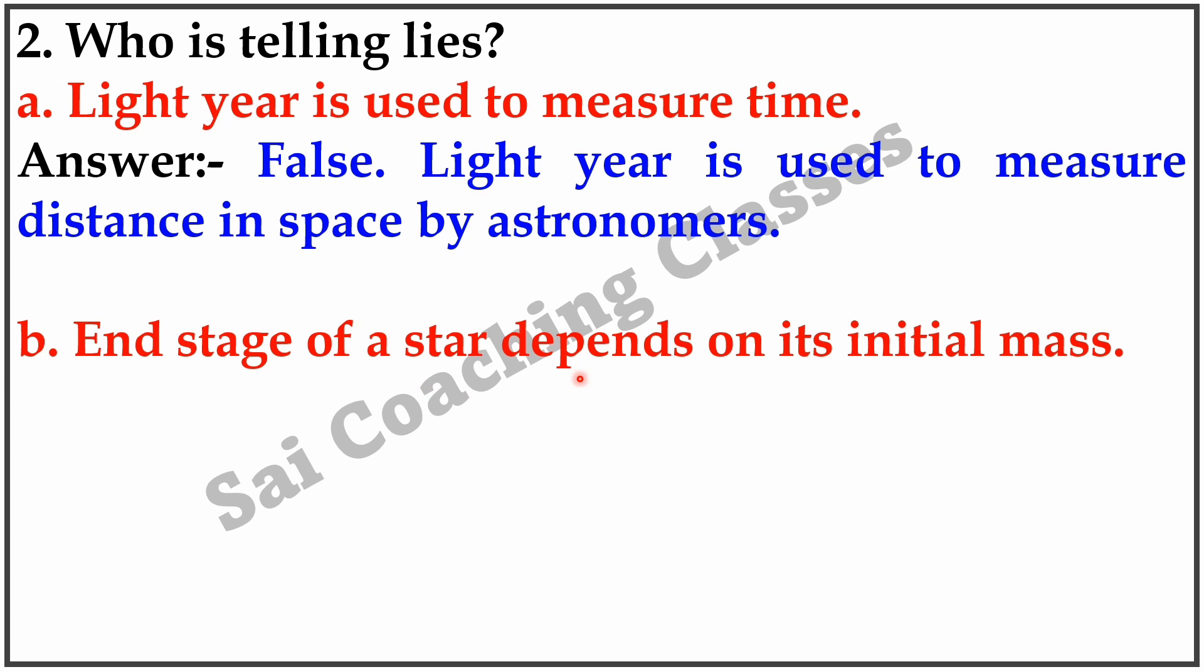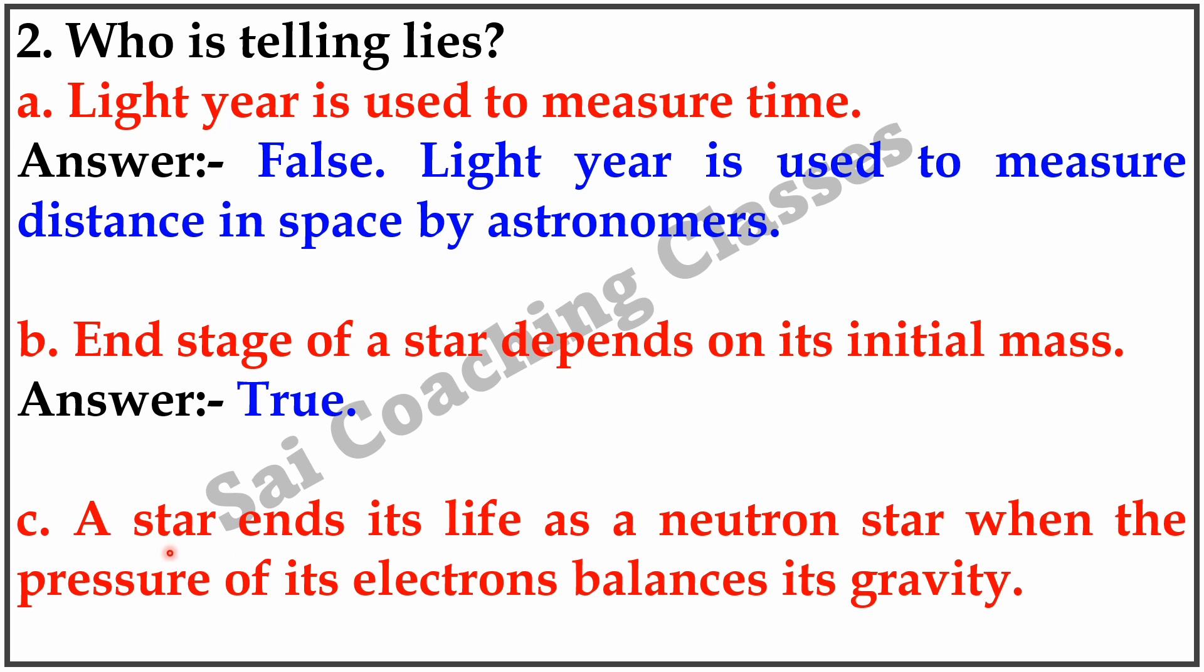B. End stage of a star depends on its initial mass. Answer: True. C. A star ends its life as a neutron star when the pressure of its electron balances gravity. Answer: True.